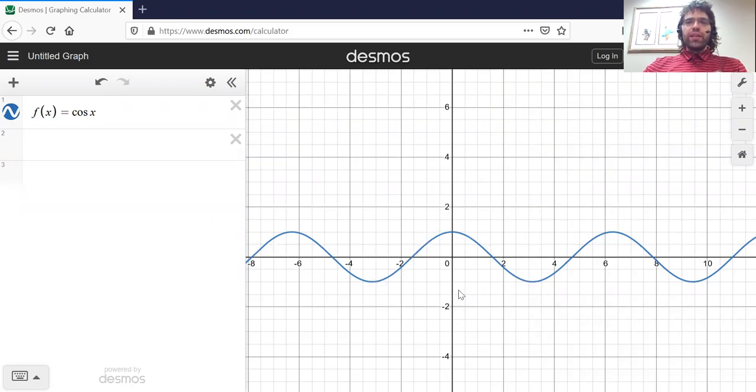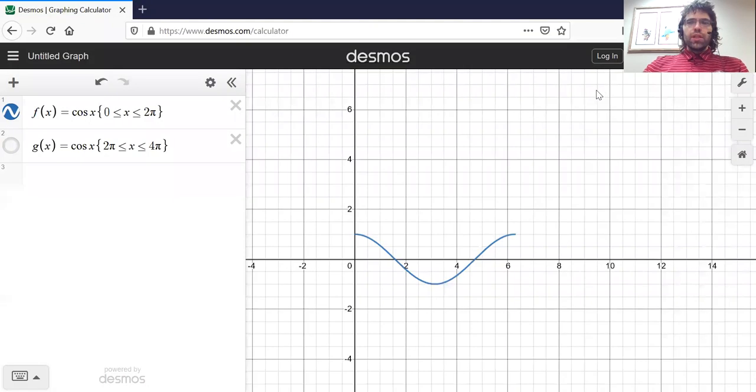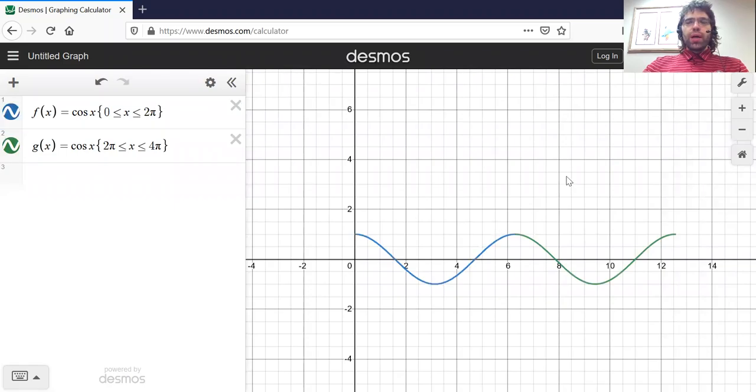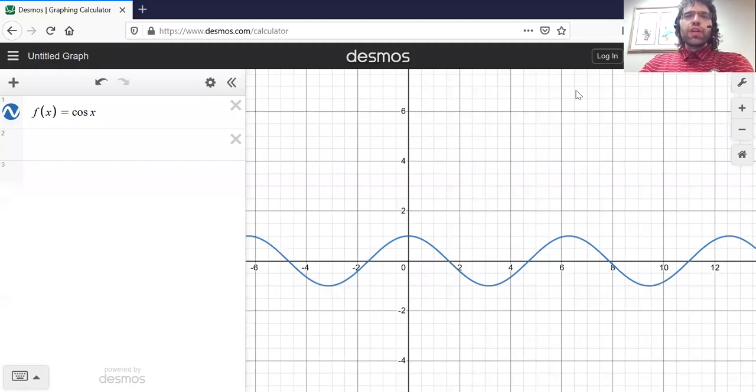It's a wave going up from negative one to one. It's periodic with period two pi. So if you pick this interval of length two pi from zero to two pi, and then you extend out another two pi, it's the same shape repeated over and over.